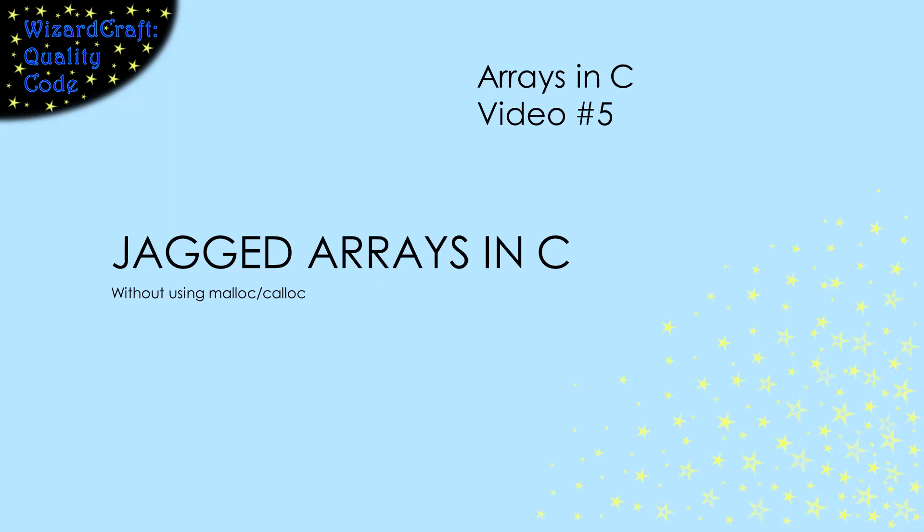We've talked about rectangular two-dimensional arrays in C. In those, all the rows have the same length. But sometimes you want a two-dimensional array where each row can have its own length. Those are called jagged arrays, and this video shows how to build and use them in C.